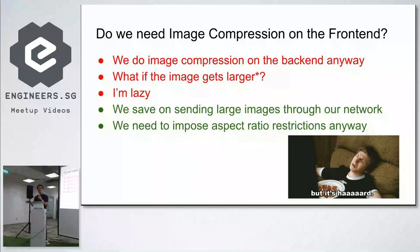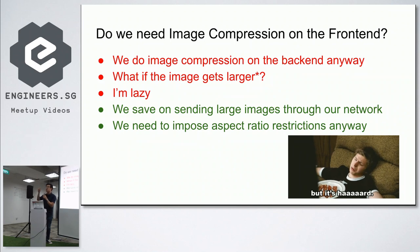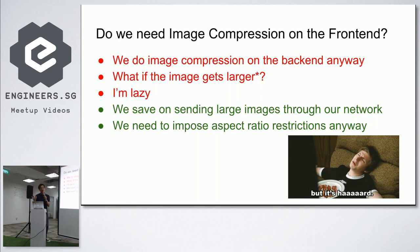So why do we need image compression on the front end? Some people say you already do image compression on the back end. But what Carousel is doing is that if we can compress it before we send it, we can save network costs because we don't need to send such huge images. Especially if someone uses a DSLR and tries to upload, it will be very annoying. And we have some aspect ratio restrictions anyway, so we might as well do it.